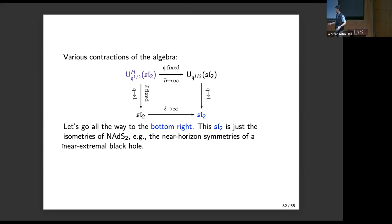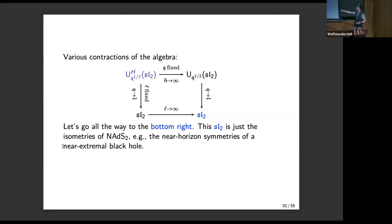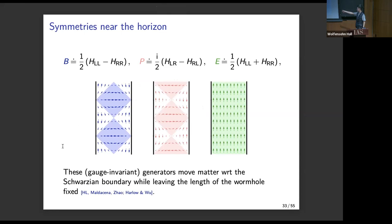We can take various contractions of this algebra. One limit is q fixed and n-bar goes to infinity — the limit of very low temperatures with a very long wormhole. Another limit is length fixed but q goes to 1, which is the standard large-q SYK limit. We can do both simultaneously to get the standard triple-scaling limit. In that limit — the bottom right — we get the isometries of nearly AdS2, which are the near-horizon symmetries of a near-extremal black hole. We've just constructed them explicitly: the expressions for the boost, the momentum, and the global time translation are given by explicit microscopic expressions. They are gauge-invariant symmetries that move matter with respect to the Schwarzian boundary while leaving the length of the wormhole fixed.